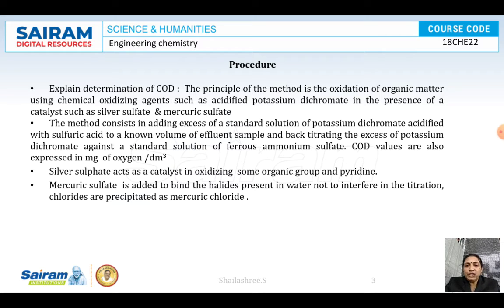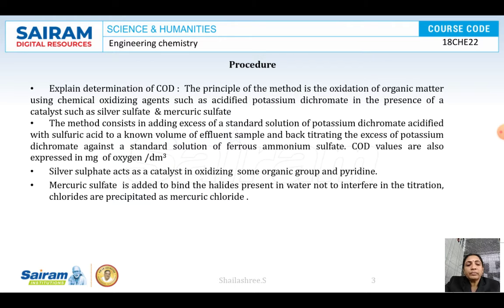Blank titration has to be performed to know the amount of unreacted potassium dichromate. For that, do not take the wastewater sample - remaining all other reagents are taken as usual. Pipette out 25 ml of dichromate, add 2 test tubes of H₂SO₄ containing silver sulfate and mercuric sulfate, add ferroin indicator, and titrate against FAS taken in the burette.